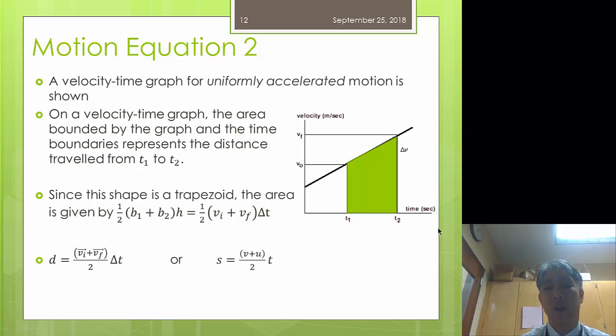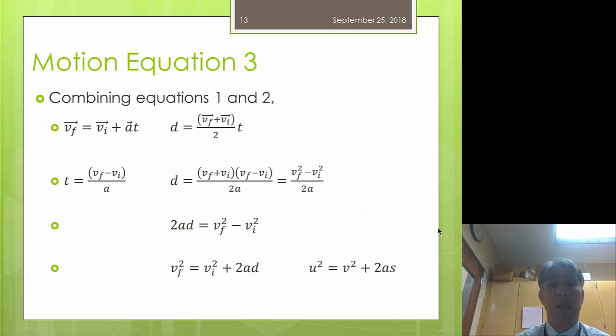And so I end up with my other equation that says displacement is equal to your average velocity, v i plus v f, divided by 2, times time.